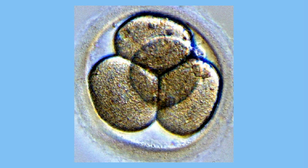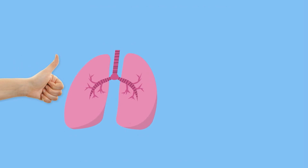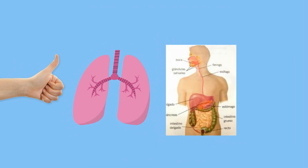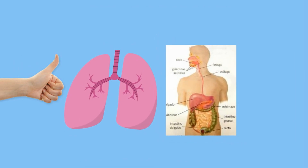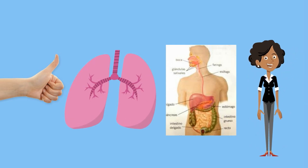As this cell multiplies, the cells start to specialize into different types of cells. For example, in humans the cells become tissues. Tissues organize into organs. Organs organize into organ systems, and organ systems create organisms.